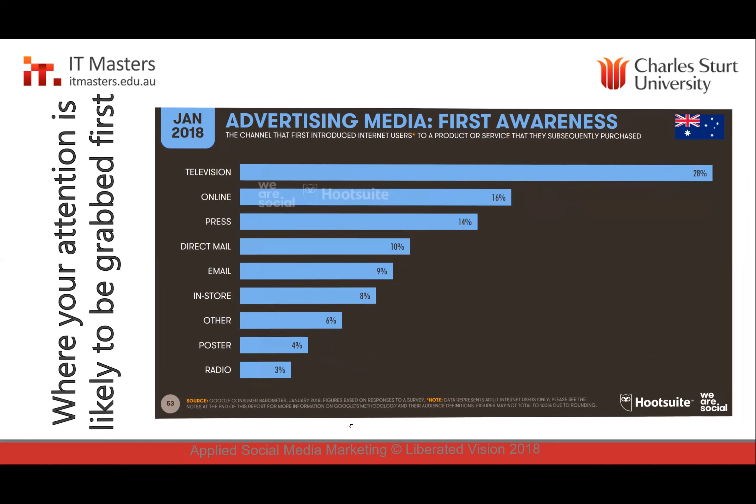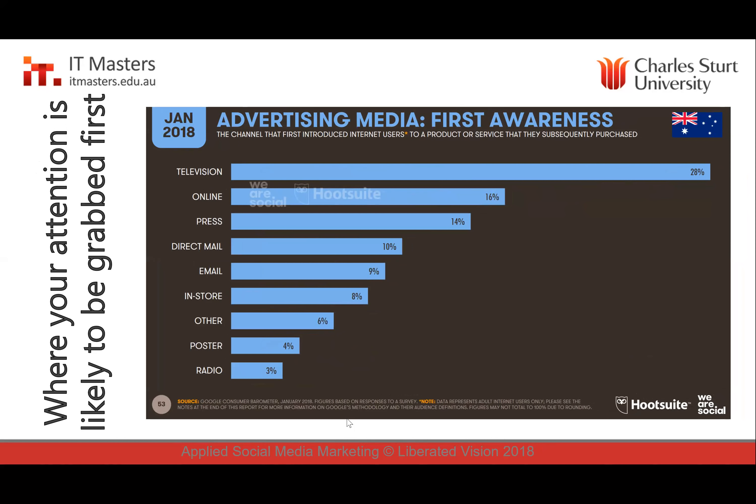From an advertising perspective, any Australian consumer is likely to be confronted by a TV ad before they see anything else — people have been talking about the downfall of television for years, but it's still number one for attention. The good news is online advertising is the second most powerful thing. This is why people are using television in conjunction with online media — shows like The Block are integrating social media and digital properties very successfully.